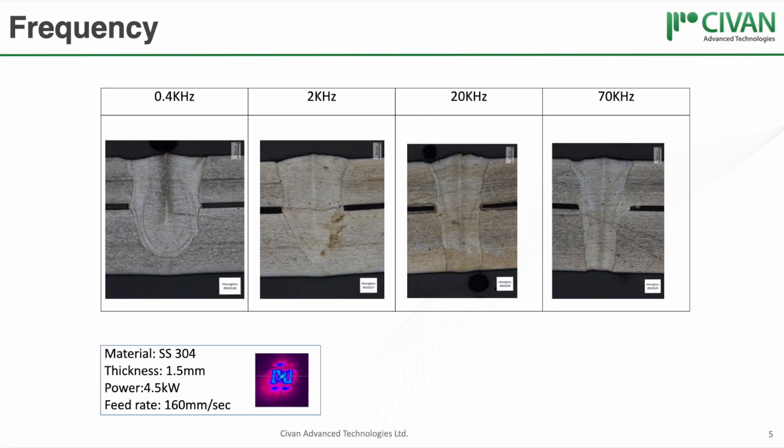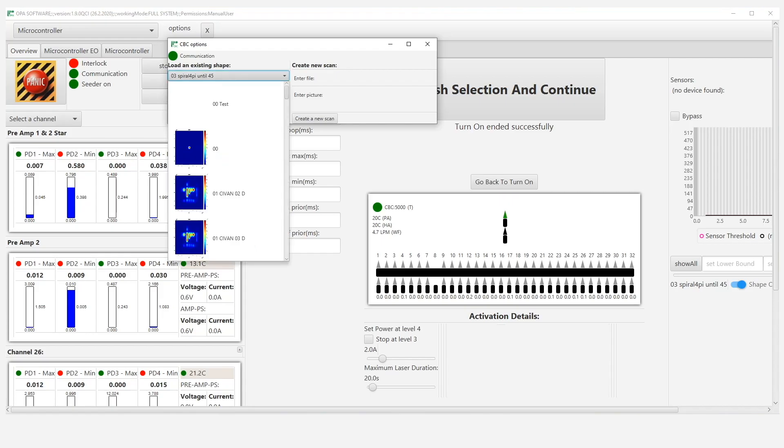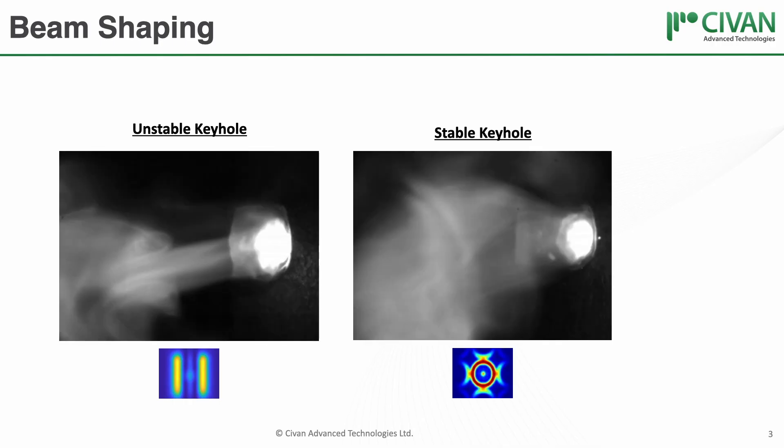Shape Frequency – Control the frequency of the beam shape from 400 Hz up to 50 MHz for achieving a stable keyhole.